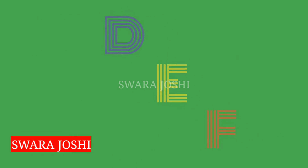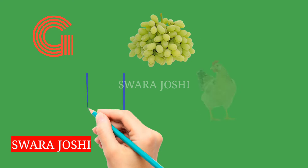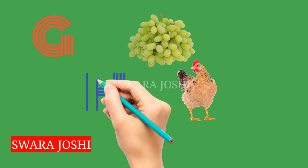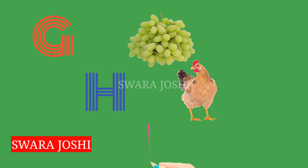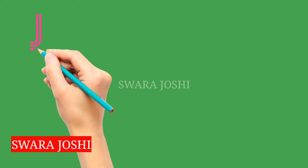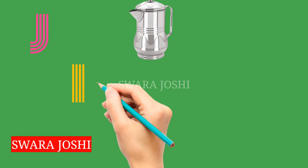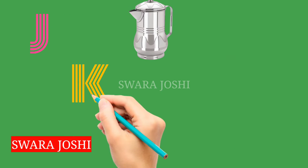G for grapes, H for hen, I for ice cream, J for jug, K for kite.